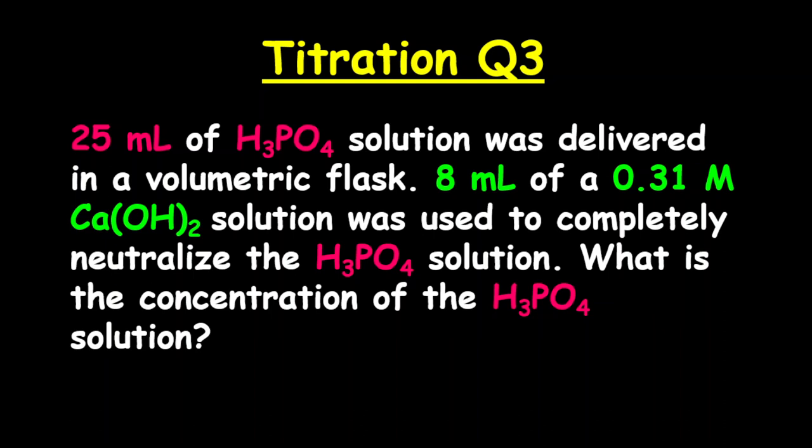delivered in a volumetric flask. 8 milliliters of a 0.31 M Ca(OH)₂ solution was used to completely neutralize the H₃PO₄ solution. What is the concentration of the H₃PO₄ solution?